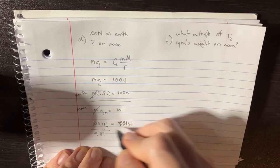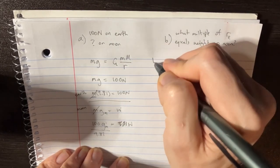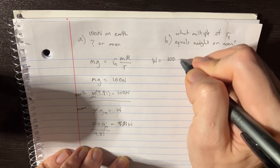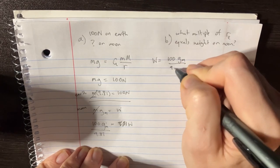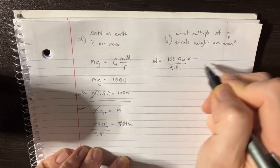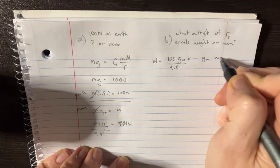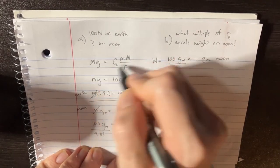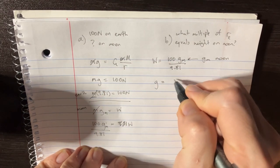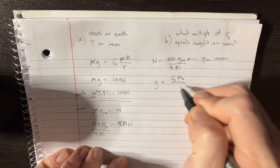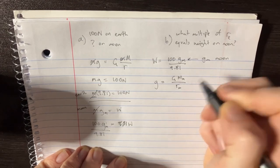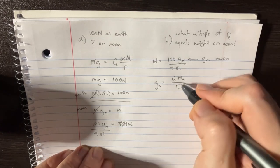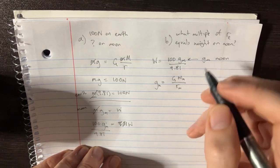If we're trying to solve for weight, how much do we weigh on the moon, that's just gonna be 100 times g_m over 9.81. So all we need to do is solve for g_m on the moon. And remember that g, if we were to get rid of the m's from our equation, we'll see that g_m, and this is the mass of the moon, over r of the moon squared, is gonna be equal to g.